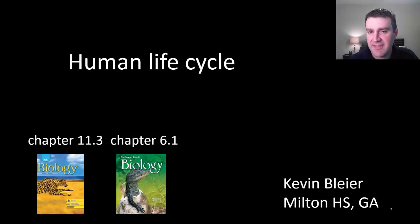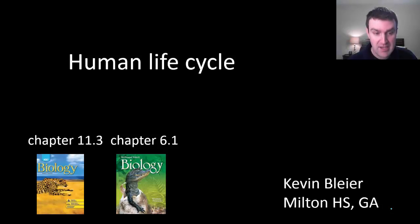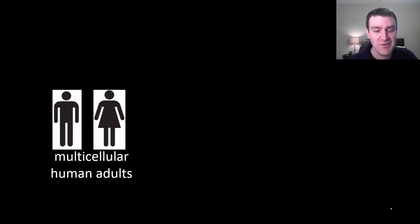In this video we just want to tie a lot of things together that we've been talking about in the previous videos by walking through the entire human reproductive life cycle. So how do we reproduce new humans in the next generation? How do we reproduce offspring?